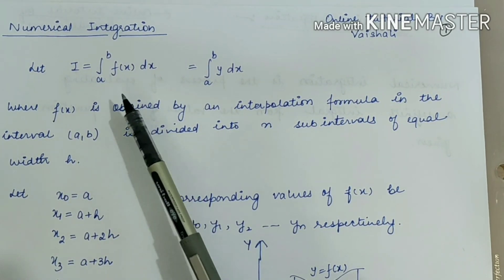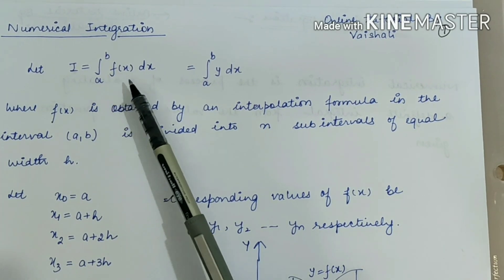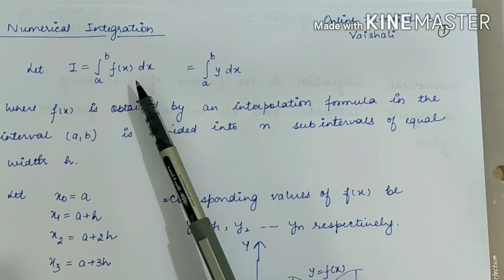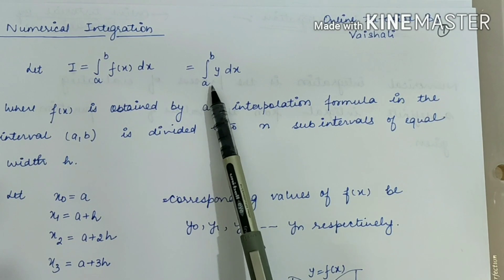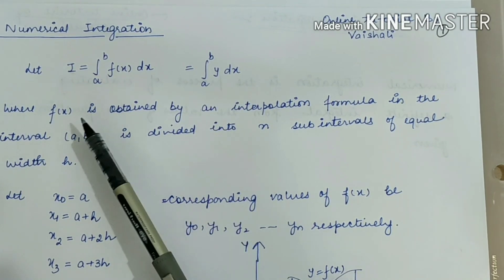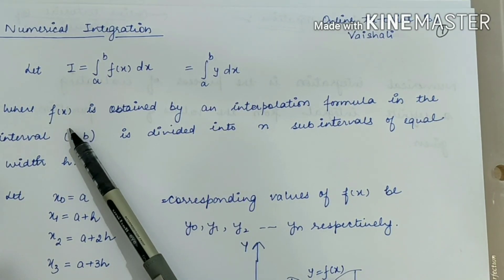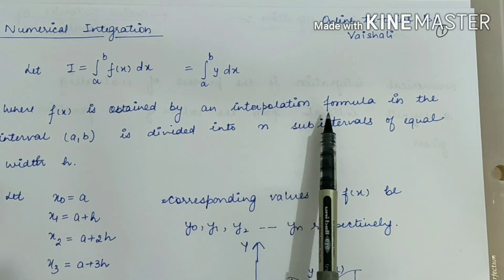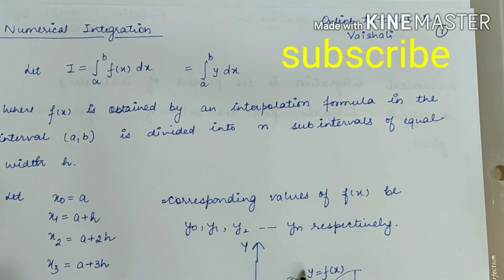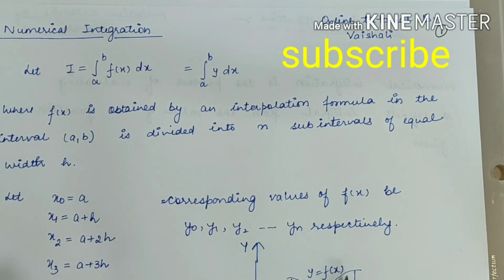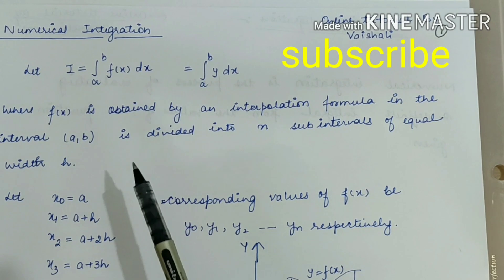The integral value is given as: integral from a to b of f(x) dx, where a to b is the limit of the interval, f(x) is the function value, and dx is the derivative. Now f(x) is obtained by the interpolation formula. The interval a to b is divided into n sub-intervals of equal width.